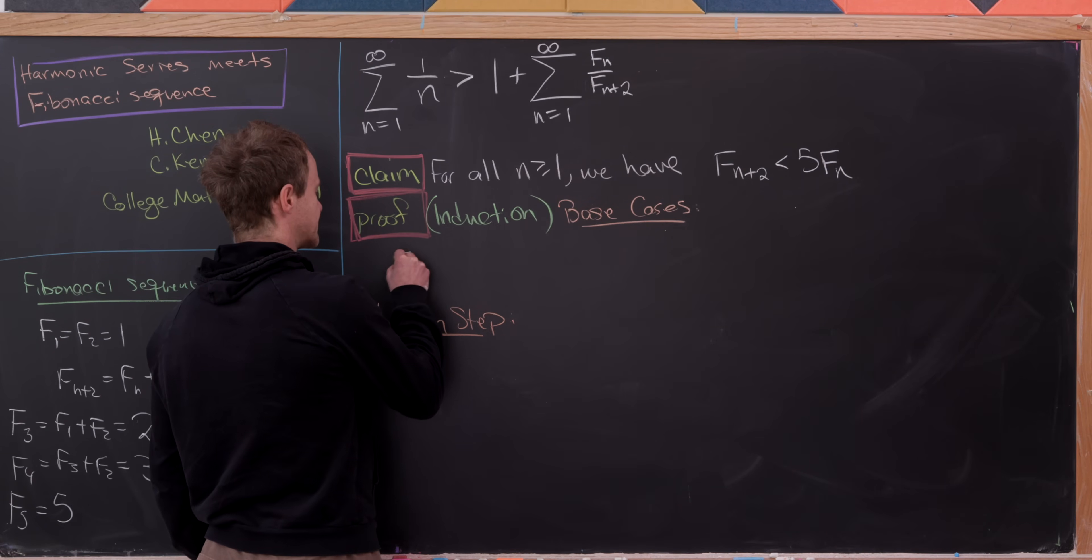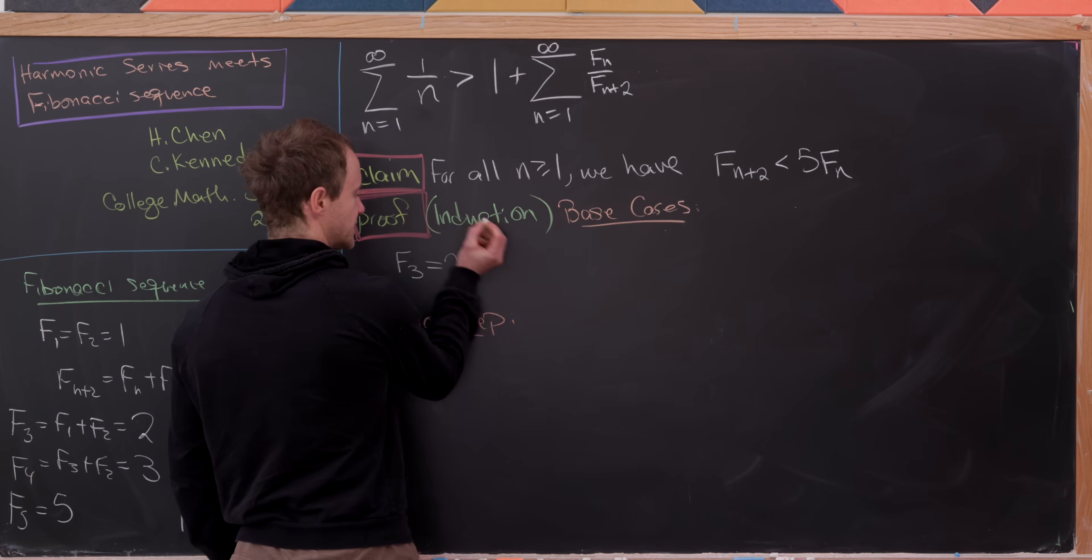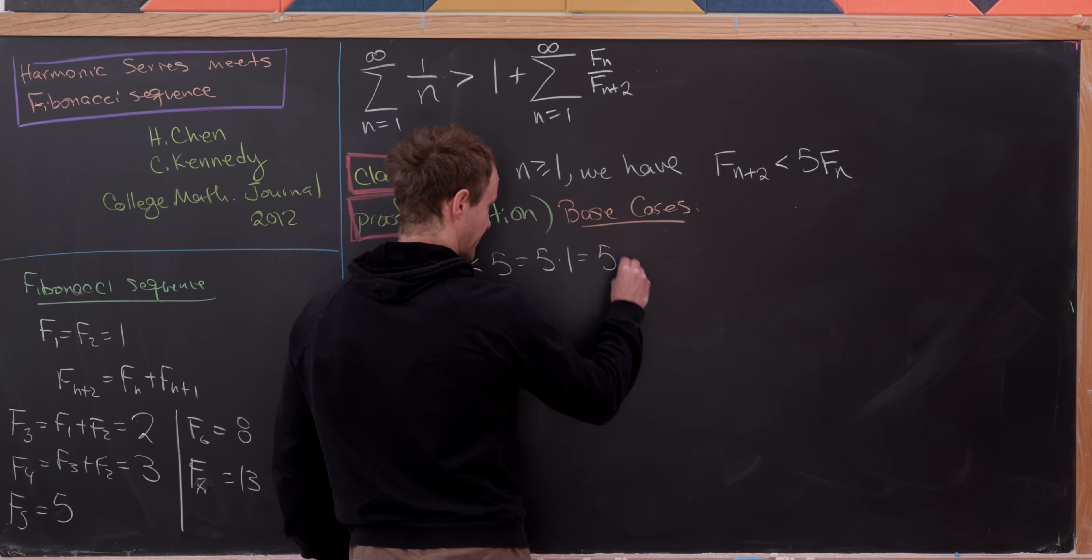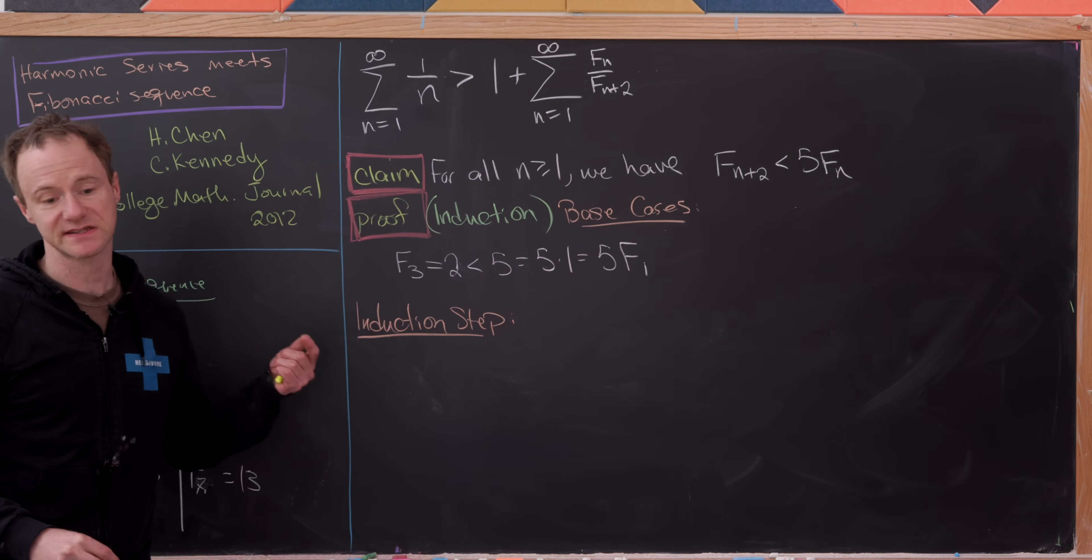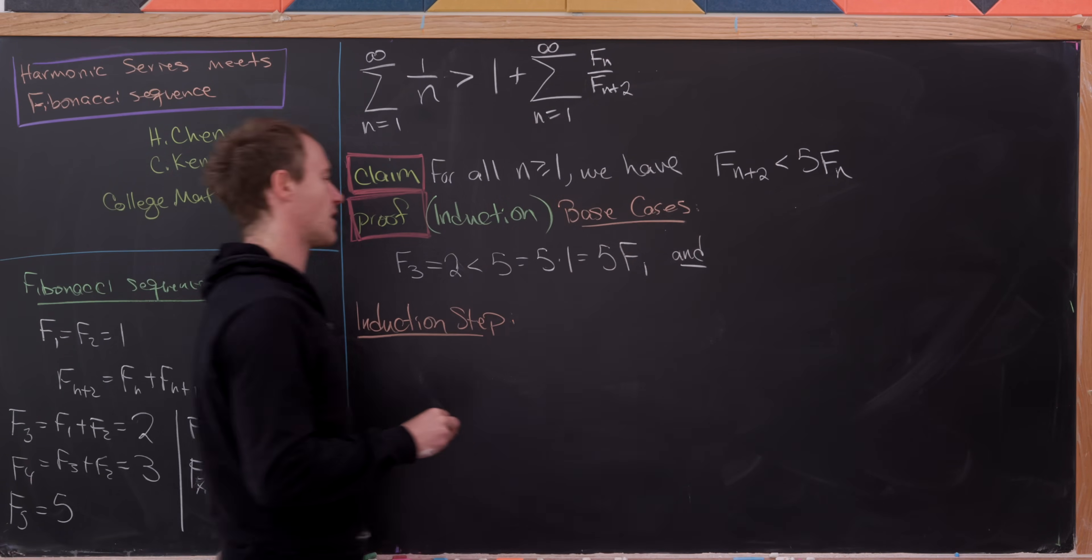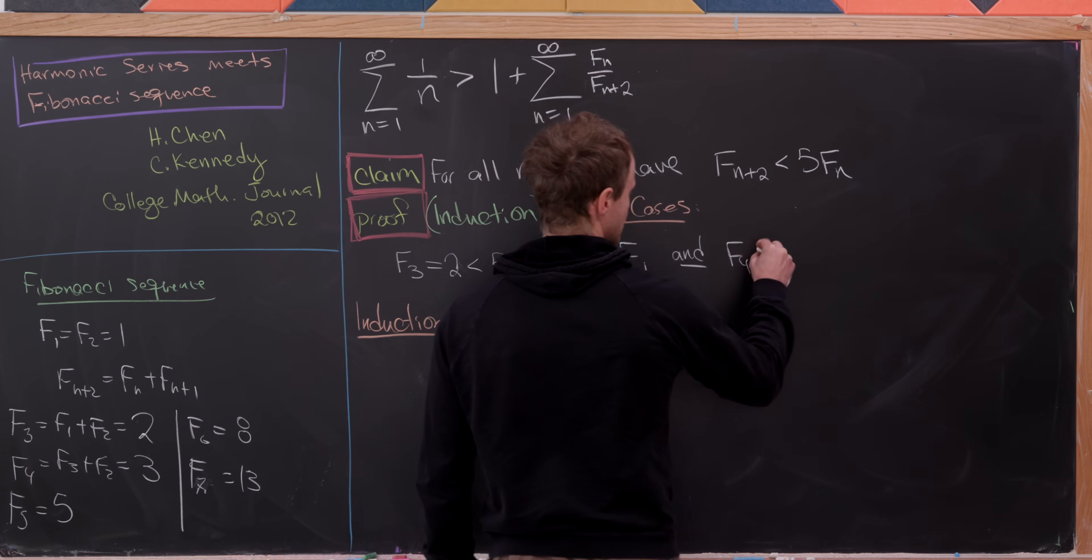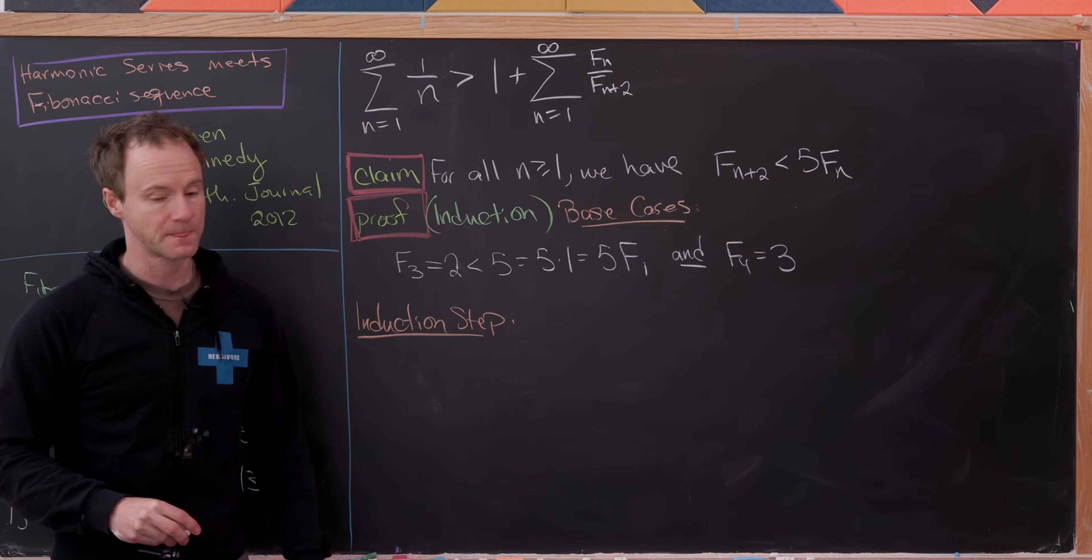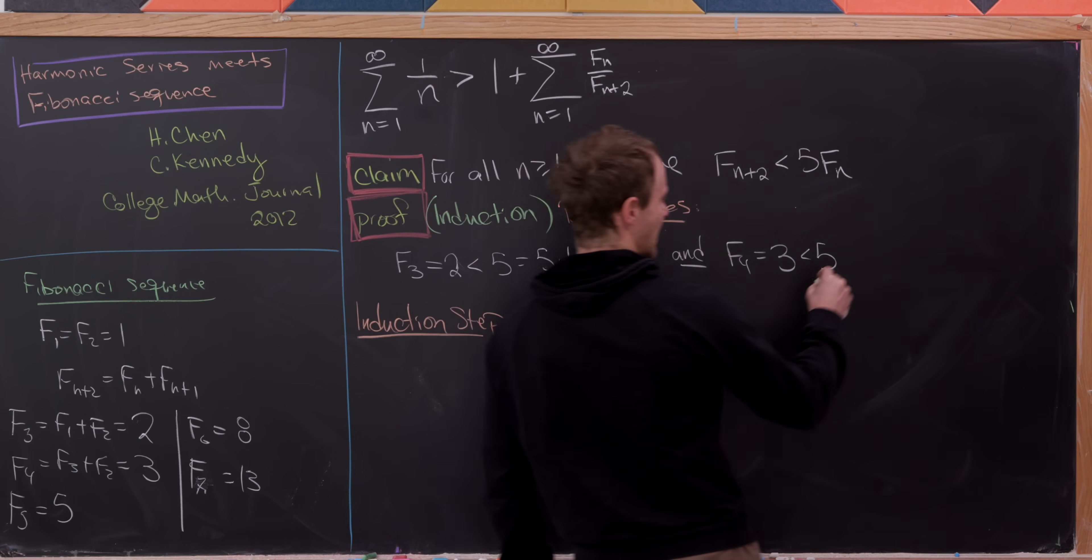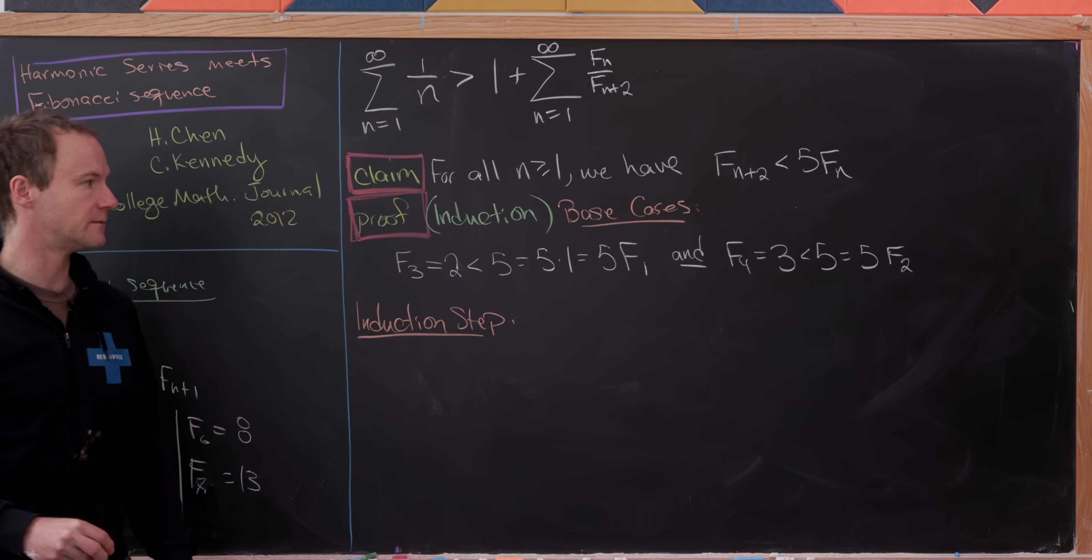So let's look at our first base case, which is like F sub 3 versus F sub 1. So observe that F sub 3 is equal to 2, but 2 is most definitely less than 5, which is equal to 5 times 1, which is equal to 5F1. So that's the first of our two base cases. And then let's see the second one, which will compare F2 and F4. So let's start with F sub 4, but by our little calculation over here, that's equal to 3. But now 3 is also less than 5. But then let's see, 5 is equal to 5 times F2, because F2 is also equal to 1. So there we have it. Those are our two base cases.